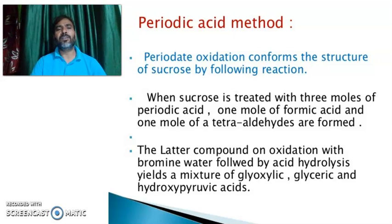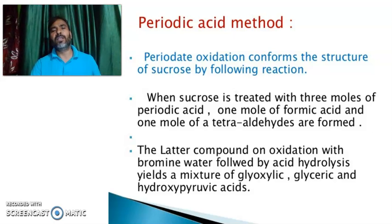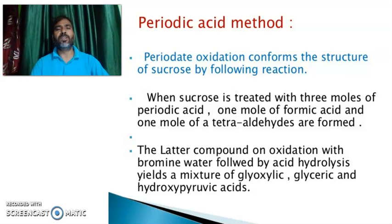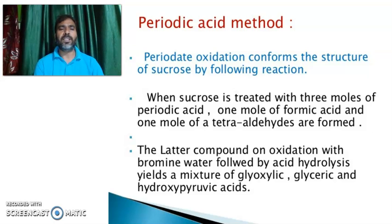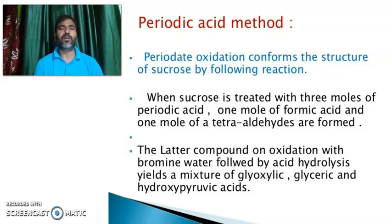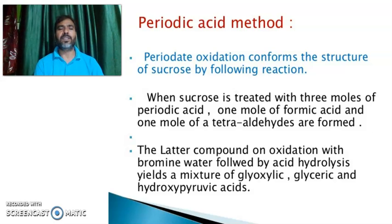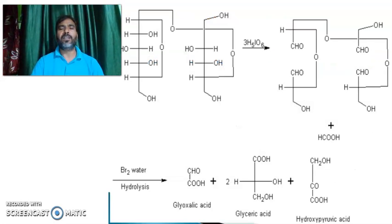Periodic acid oxidation confirms the structure of Sucrose by the following evidence. When Sucrose is treated with three moles of periodic acid, one mole of formic acid and one mole of tetraldehyde are formed. The latter compound on oxidation with bromine water followed by acid hydrolysis yields a mixture of glyoxylic acid, glyceric acid, and hydroxypyruvic acid. You can see periodic acid forming hydroxypyruvic acid, glyceric acid, and glyoxylic acid.